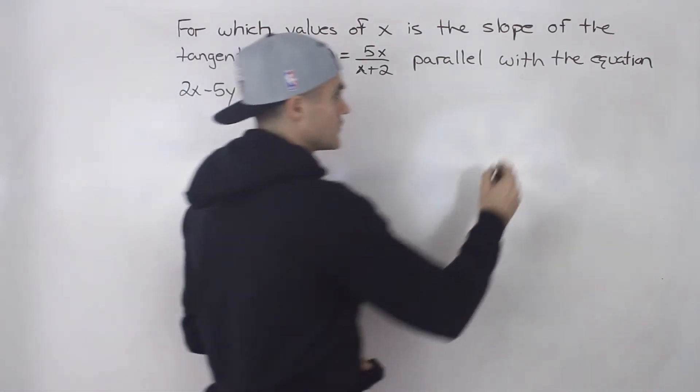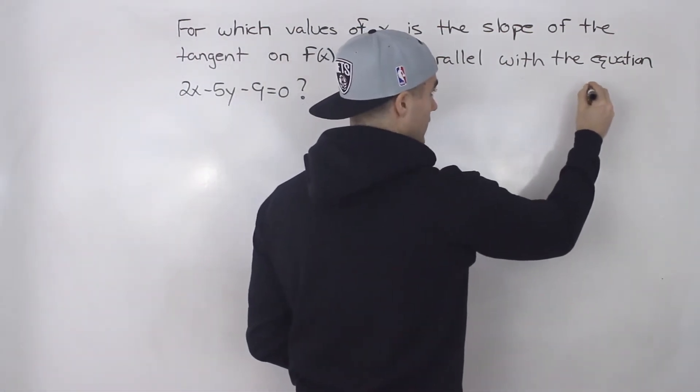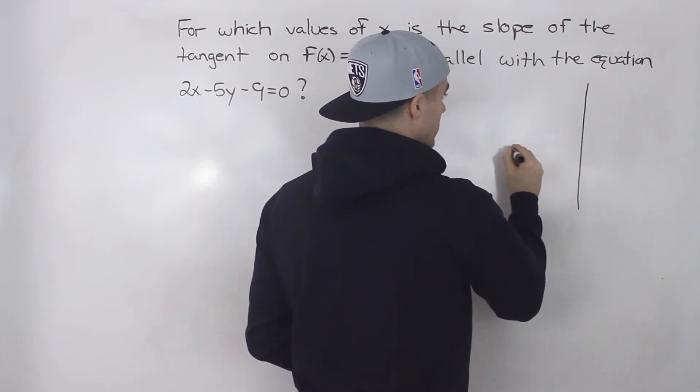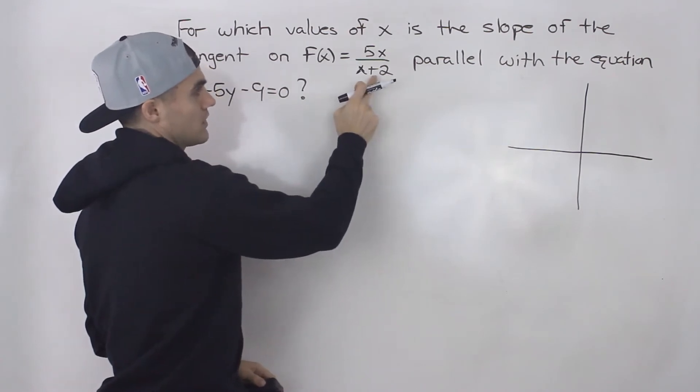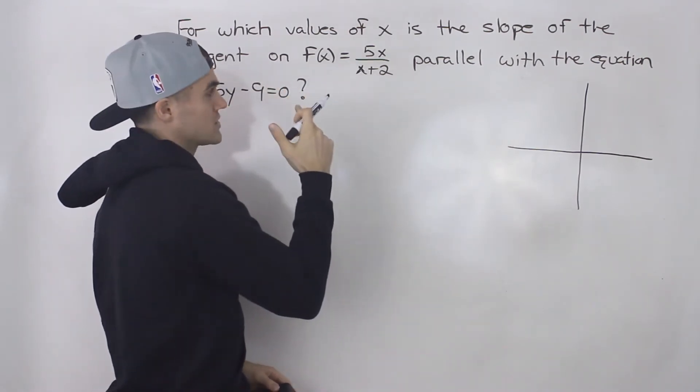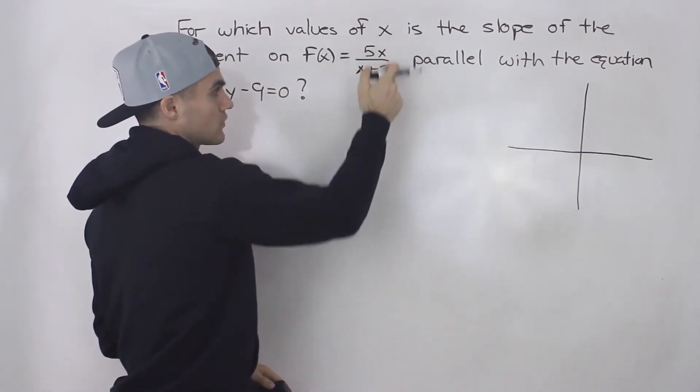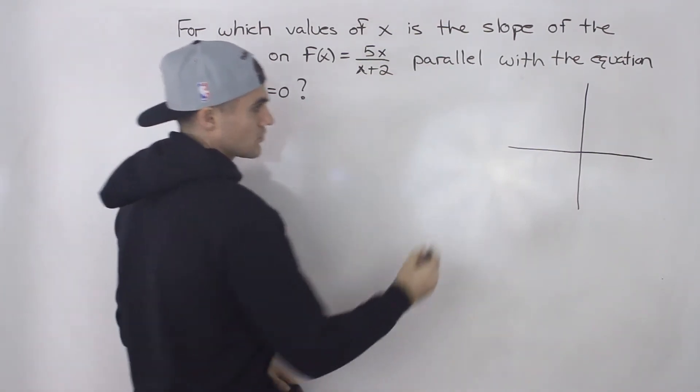So first let's show visually what's going on before we get into graphing. Now you're not always going to be able to show visually what's going on, but this function we've gone over in advanced functions how to graph. It's basically a linear over a linear. So let's graph it out first.